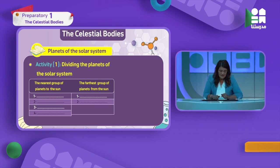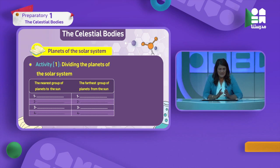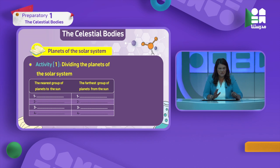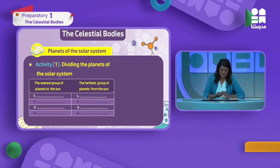Now for an exercise: I want you to make a division of the planets of the solar system by yourself using the table shown. You should already know who the nearest planets are and write them, who the farthest planets are and write them, and what the belt that separates them is called. You should have memorized all of this by now.